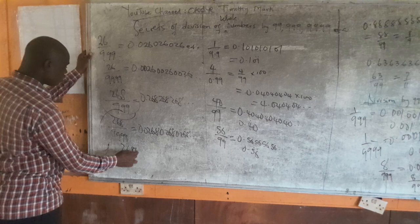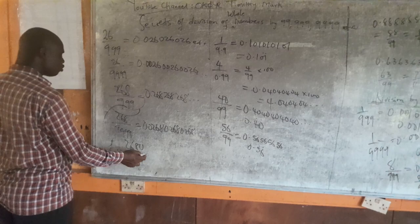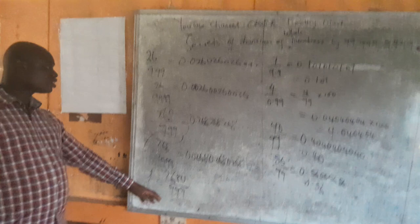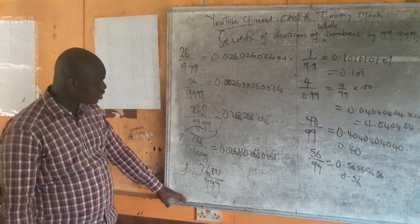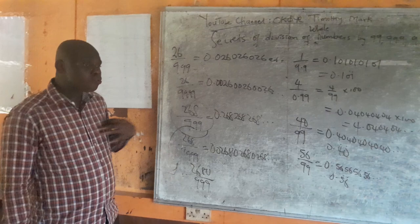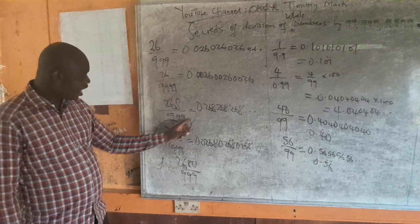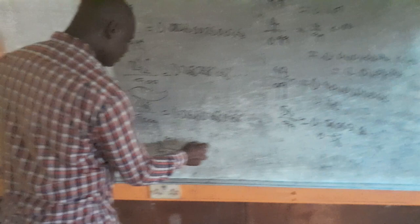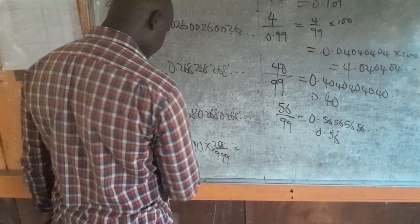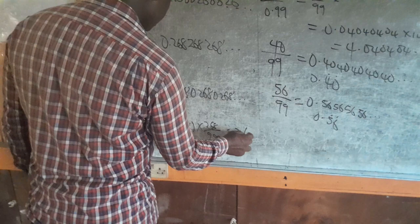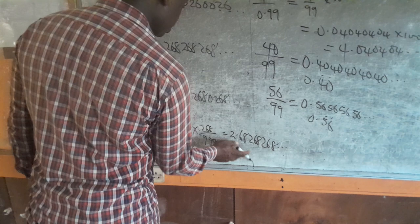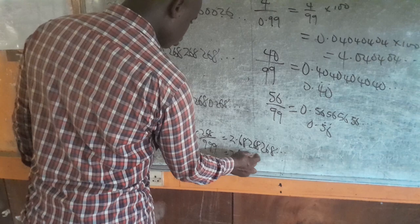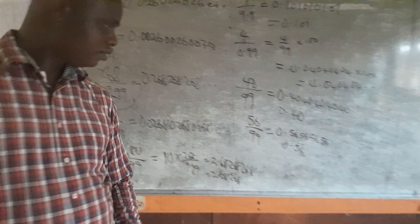Now if you're given something like 2680 over 9999, you can decipher it easily using what you've learned. If you are given 268 over 99.9, note that 99.9 is 1/10 of 999. So compute 268 over 999 first, then multiply the answer by 10. That gives you 2.68, 268, 268... repeating.